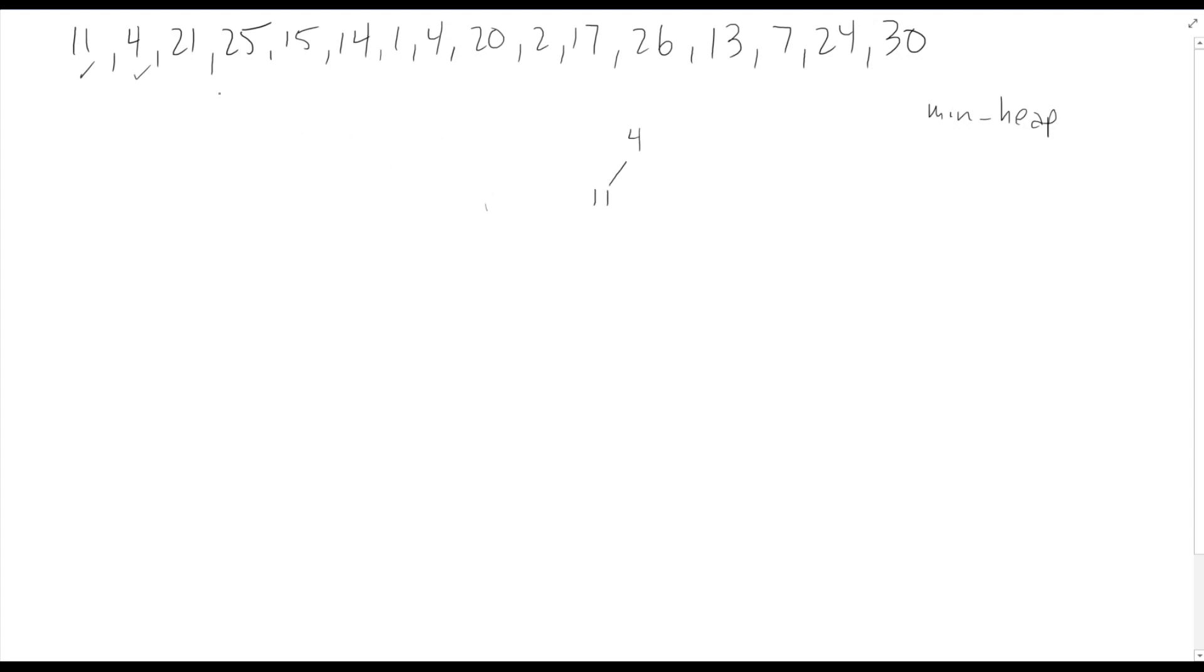So this is the state of our heap after this add. Now we can go ahead and make the 21. The 21 is going to be added in this position. Again, we'll check our invariant. 4 is less than 21, so we're good.